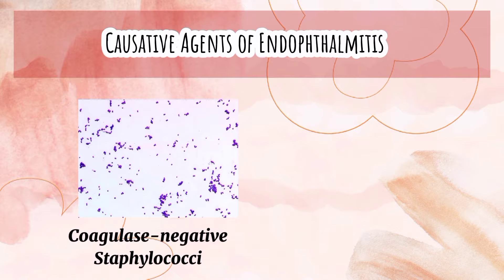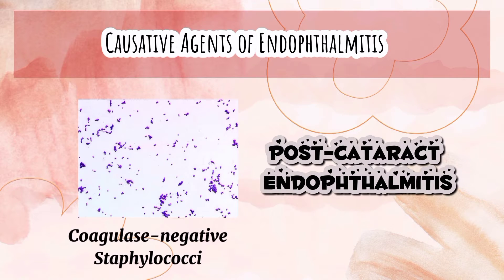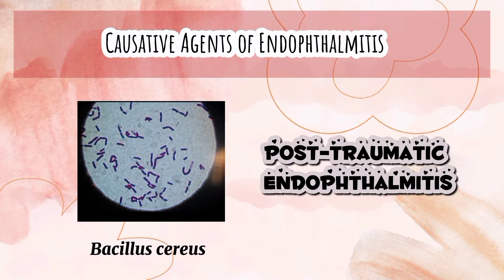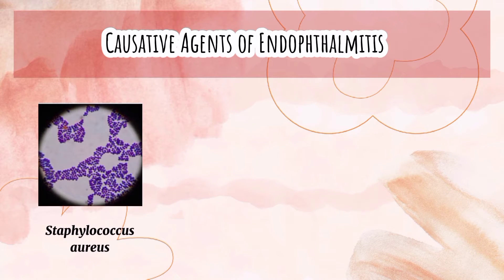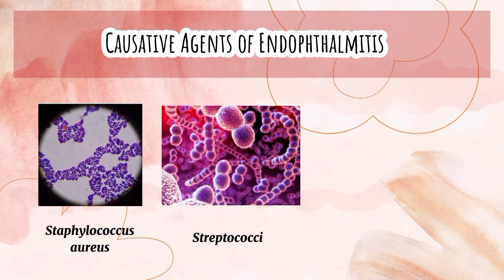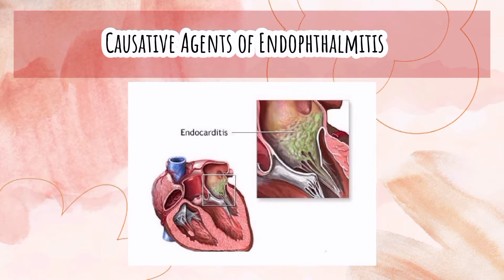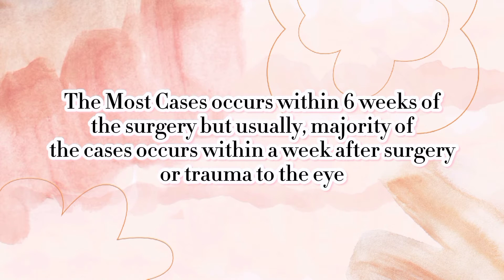Coagulase negative staphylococci are the most common causes of post-cataract endophthalmitis. Bacillus cereus is a major cause of post-traumatic endophthalmitis, and staphylococcus aureus and streptococci are most causes of endogenous endophthalmitis associated with endocarditis. Most cases occur within 6 weeks of surgery, but the majority occur within a week after surgery or trauma to the eye.